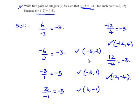Therefore the five pairs are: negative 6 comma 2, negative 3 comma 1, 3 comma negative 1, negative 12 comma 4, and 12 comma negative 4.